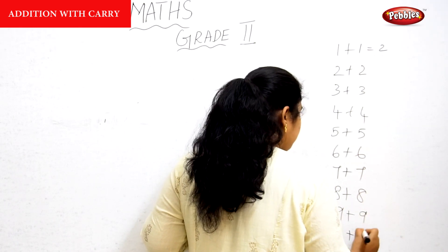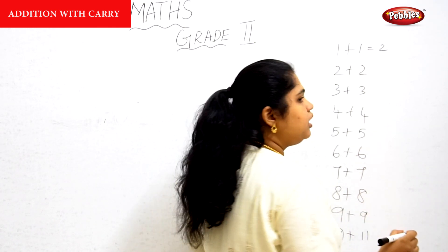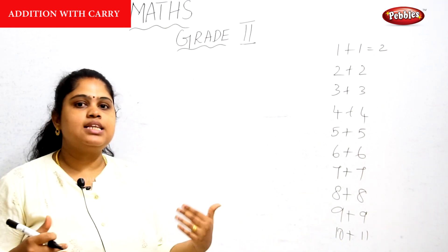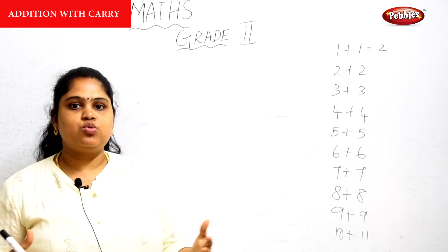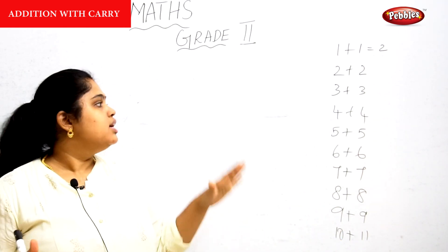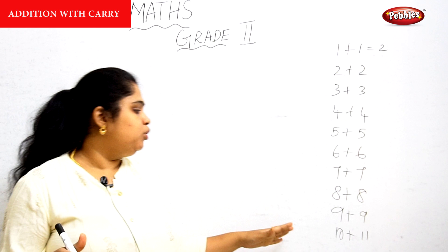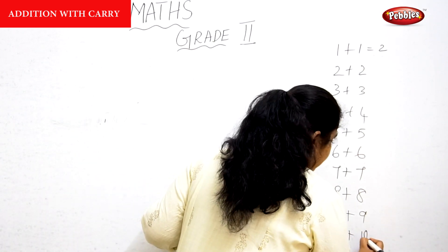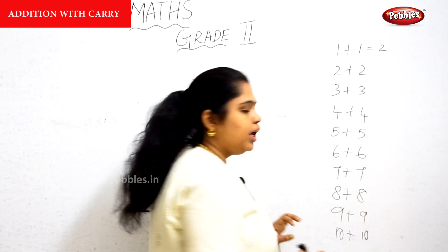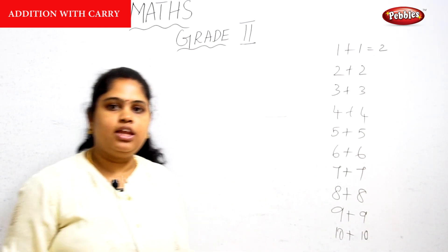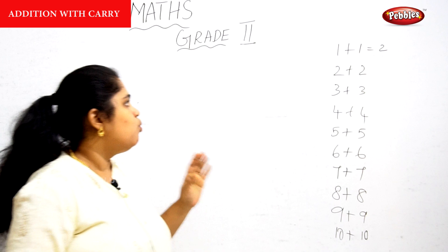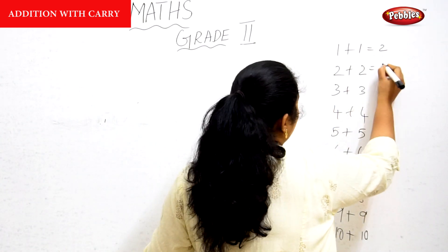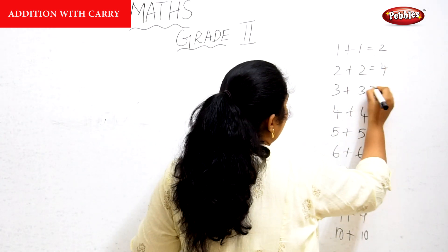You don't need to memorize 11 plus 11, 12 plus 12 — there is no need. But at least up to 10, you have to be very clear. Up to 10, you have to be very clear. 1 plus 1 is equal to 2, 2 plus 2 is 4.